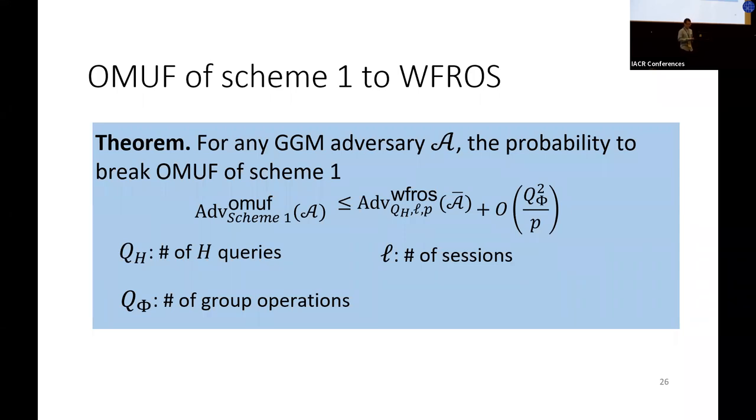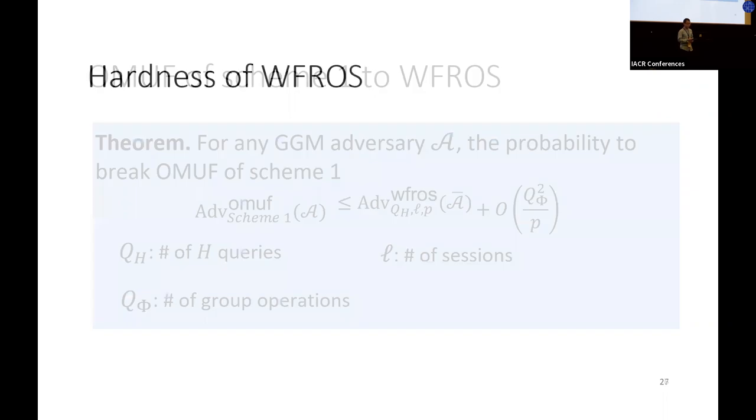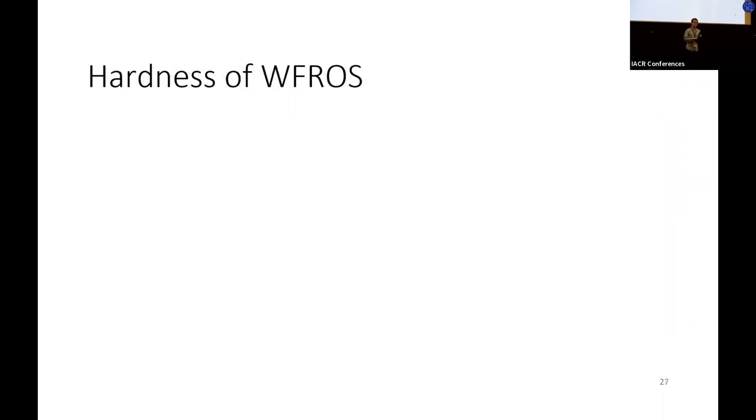For a polynomial time adversary, we can see that the negligible term is actually negligible. Therefore, our scheme 1 is secure as long as the WFROS problem is hard.